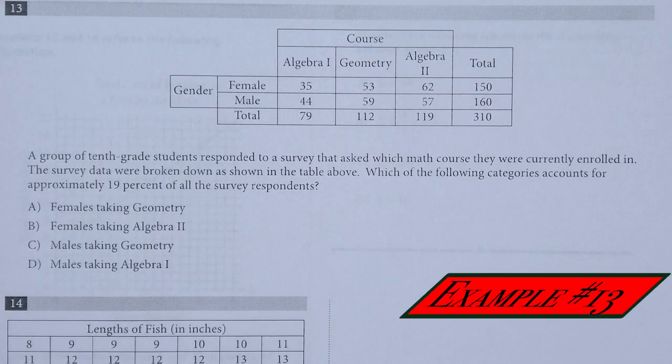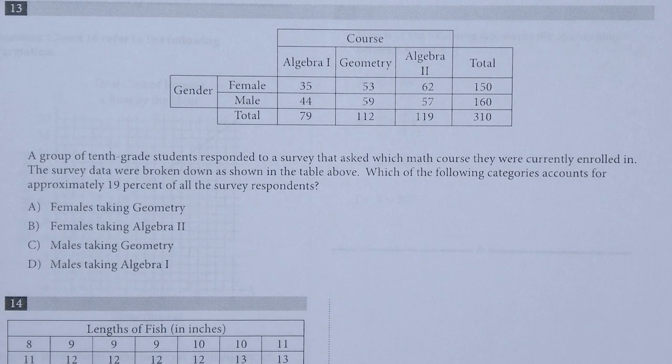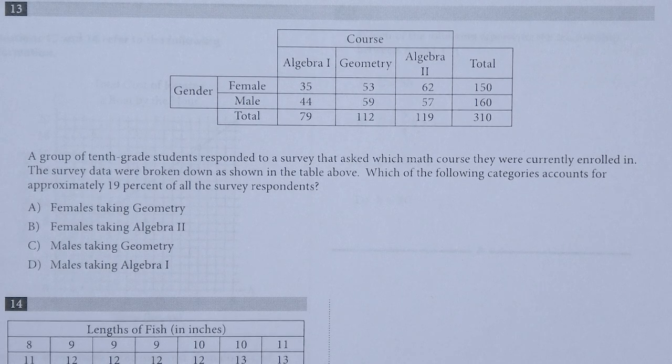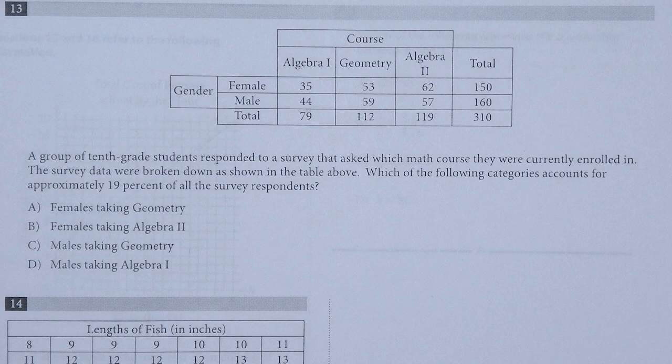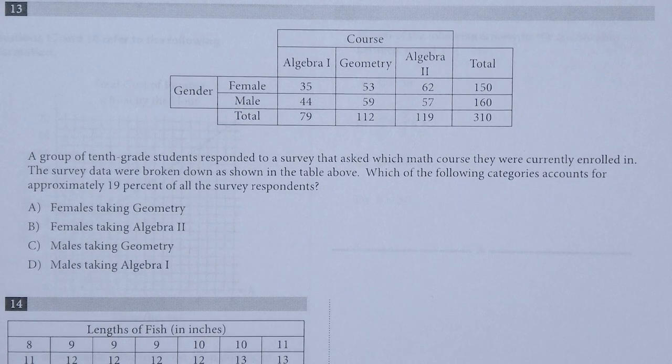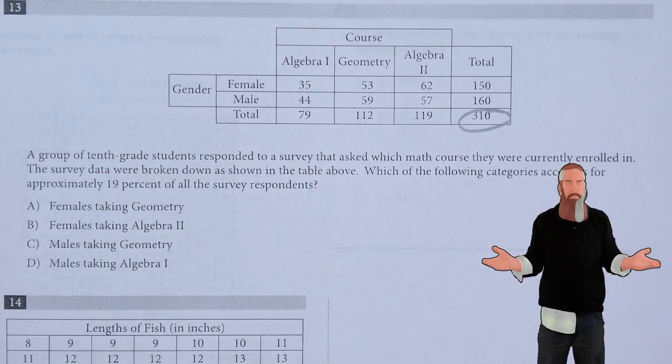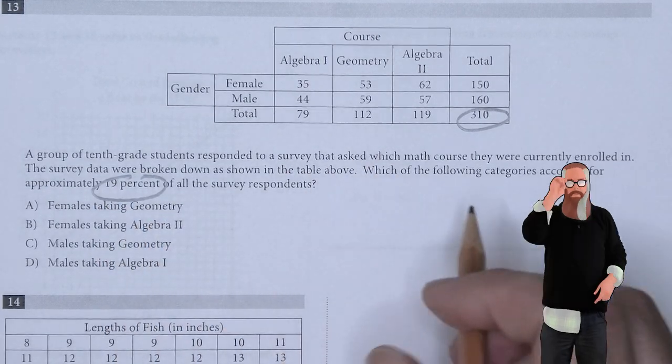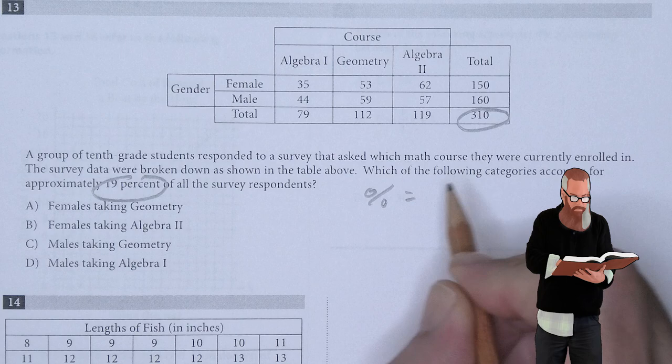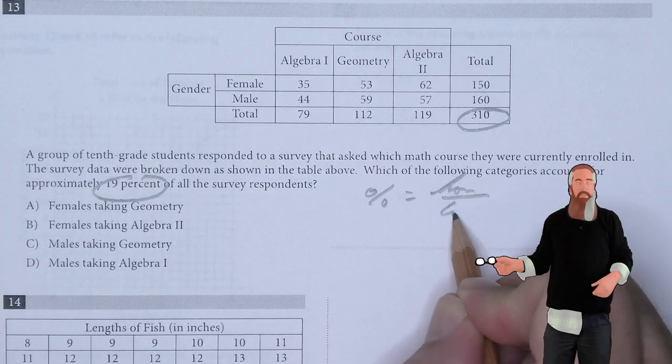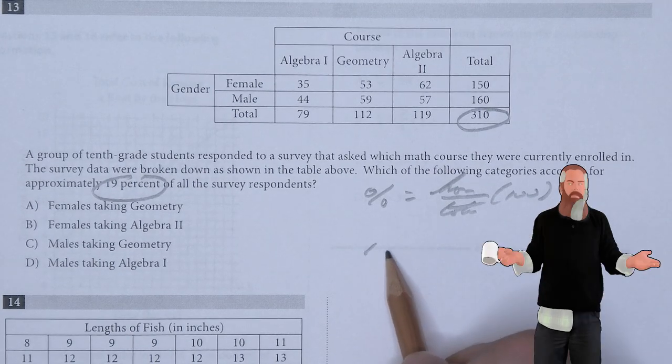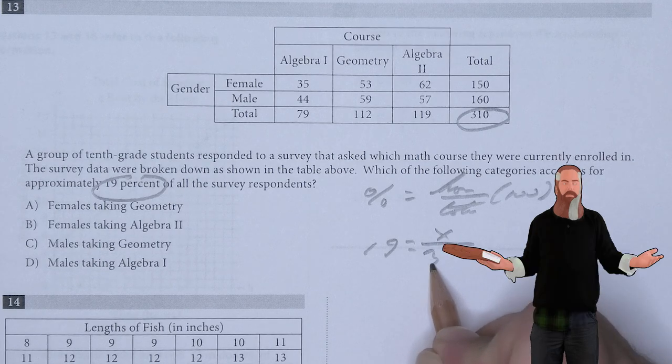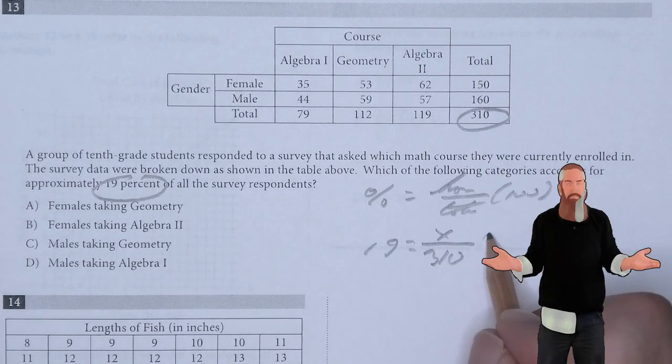A group of 10th grade students responded to a survey that asked which math course they were currently enrolled in. The survey data were broken down as shown in the table above. Which of the following categories accounts for approximately 19% of the survey responses? The total response was 310. We're after 19%.